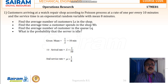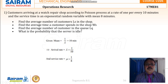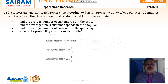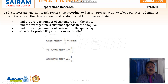The statement of the problem goes like this. Customers are arriving at a watch repair shop according to Poisson distribution at a rate of one per every ten minutes. So every ten minutes one customer is arriving, meaning the mean inter-arrival time is ten minutes. The service time is following exponential distribution with a mean of eight minutes, so on average it takes eight minutes to serve a customer. Service rate mu is one by eight.